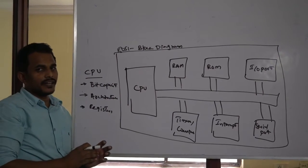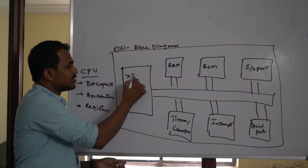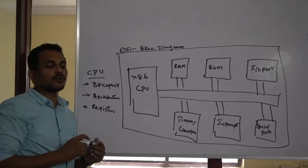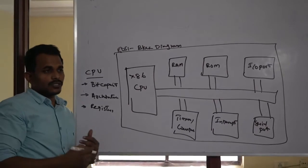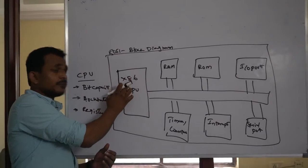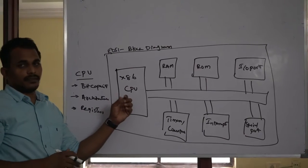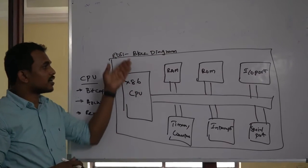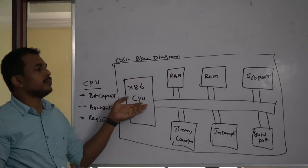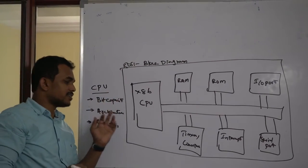The bit capacity tells you how many binary bits it can handle at a time. For all 8051 families, they use x86 basic processors as a CPU. That is the relation between processor and controller — after processors, people started designing controllers, because every controller consists of one internal processor as a CPU. This processor decides the controller's bit capacity. Since x86 processors have 8-bit handling capability, the microcontroller is an 8-bit microcontroller.